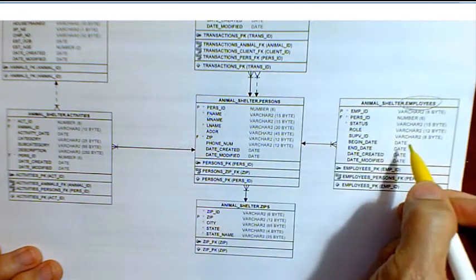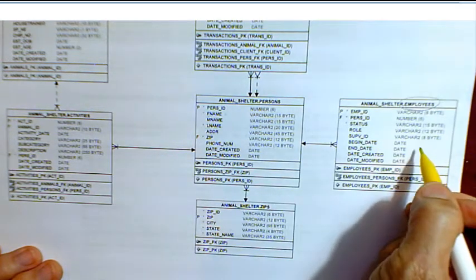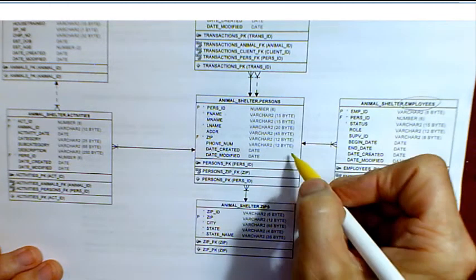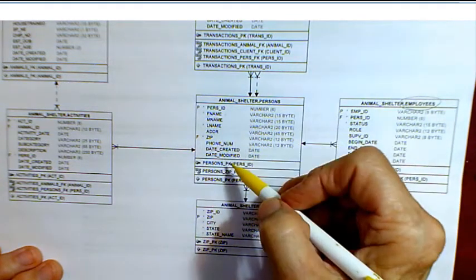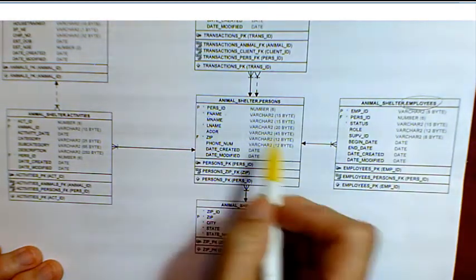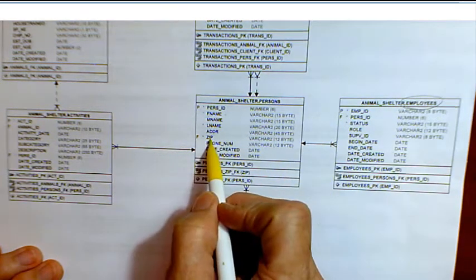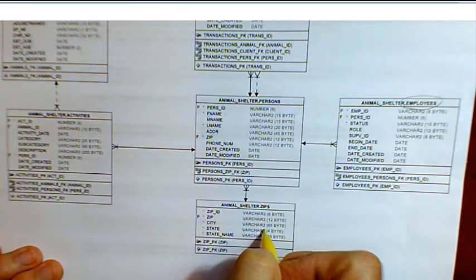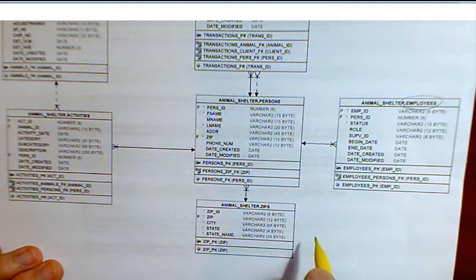Any one person might be an employee. Every employee is a person, so they're going to have related information in this table. We'll know where each person is if we have a zip code because the zip code table will provide the city state information for that specific zip code.